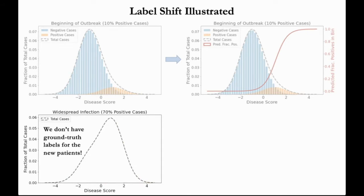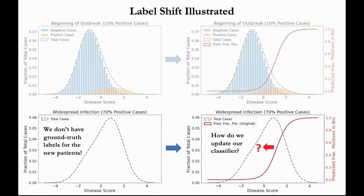However, it takes resources to perform tests to gather the ground truth labels for who has the disease, and at this stage of widespread infection we may not have those resources. All we have is the overall distribution of total patients, which is shown in gray. Label shift adaptation addresses how to update the predictions to be the most accurate without access to these ground truth labels.